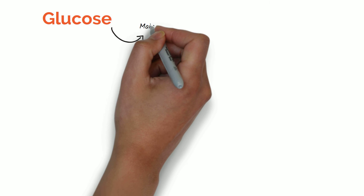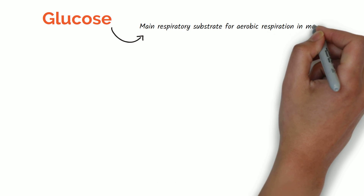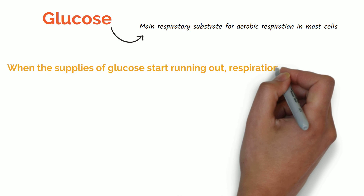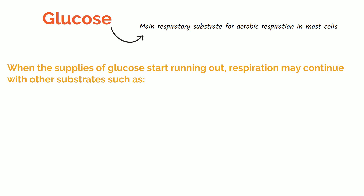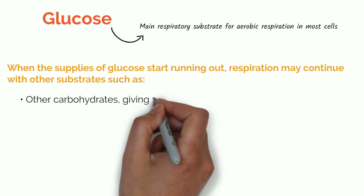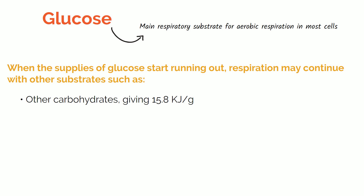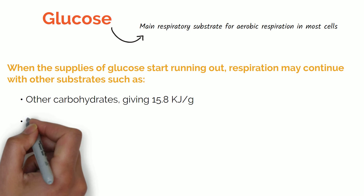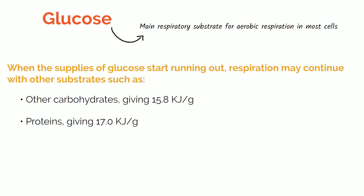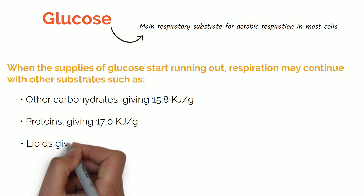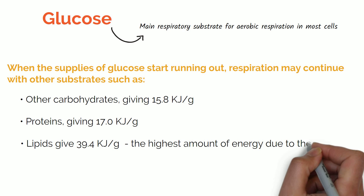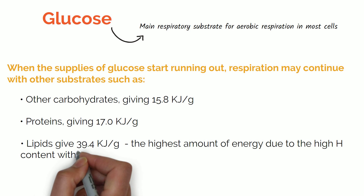Glucose is the main respiratory substrate for aerobic respiration in most cells. When the supply of glucose in the cell has been used up, respiration may continue with other substrates such as other carbohydrates giving 15.8 kilojoules per gram, proteins giving 17 kilojoules per gram, and lipids which give 39.4 kilojoules per gram. Lipids give the highest energy value due to the high concentration of hydrogen within the fatty acid chains.